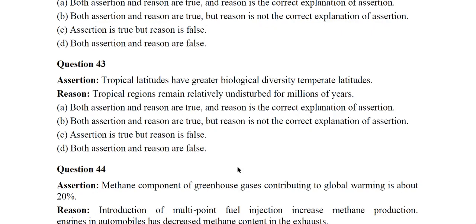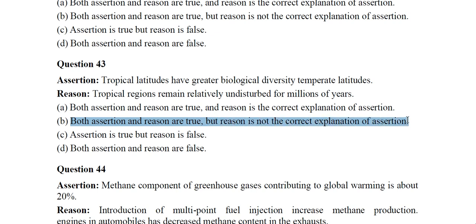Question 43: Assertion — tropical latitudes have greater biological diversity compared to temperate latitudes. Reason — tropical regions remained relatively undisturbed for millions of years. The correct answer is option B: both assertion and reason are true but reason is not the correct explanation of assertion.